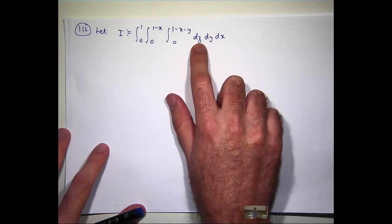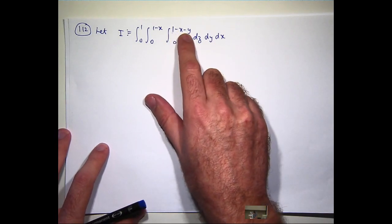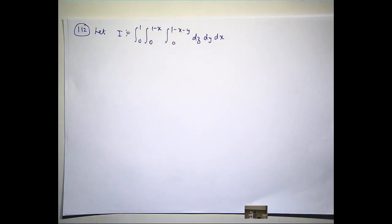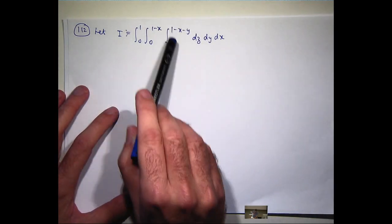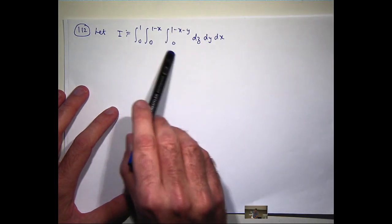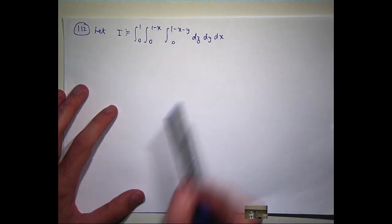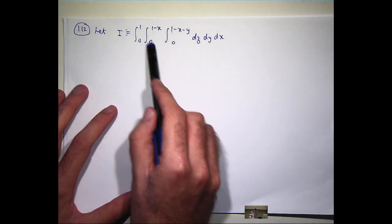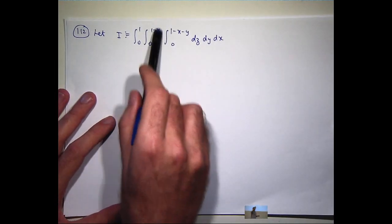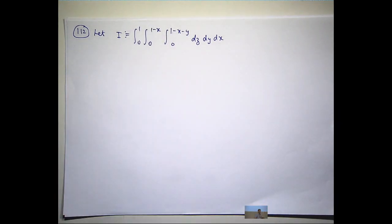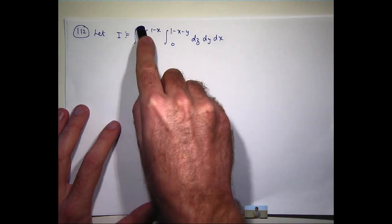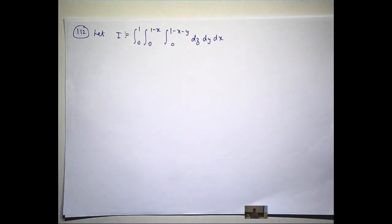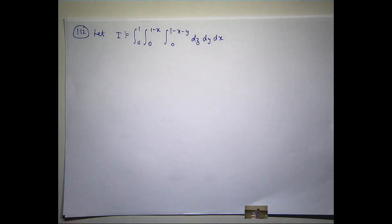The z is between 0 and 1 minus x minus y. Okay, now that's two surfaces. This top one's going to be a plane and the bottom one's going to be just the x, y coordinate plane. y will be between this function of x, just the 0 function, and this function of x. This is just going to be a straight line. And then x is going to be between 0 and 1. So, I'm actually going to sketch the region in first.